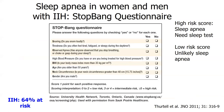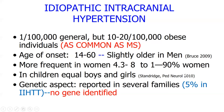Sleep apnea is one cause we always ask about. I have a handout called STOP-BANG, a mnemonic for: Snoring, Tiredness, Observed apnea, high blood Pressure, BMI, Age, Neck circumference, and Gender — with males at higher risk. About 64 percent of people with IIH also have sleep apnea, so a sleep study may be necessary.